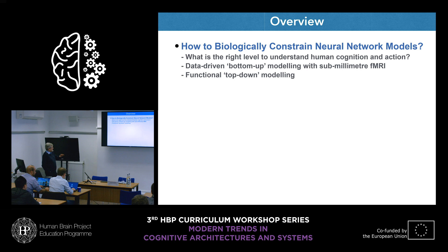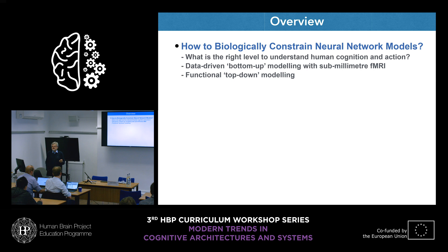A lot of what I'm saying, no one knows the answer to, so you are invited to solve this in the next years. The first point is I want to discuss how to biologically constrain neural network models. The Human Brain Project wants to build simulations of the brain, and these should be not just technical solutions but inspired and constrained by knowledge from the brain. How to do that is actually very challenging and no one has a complete answer.